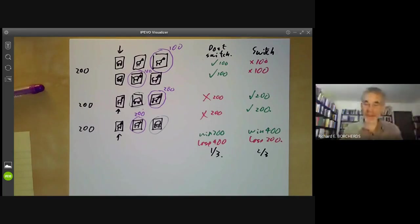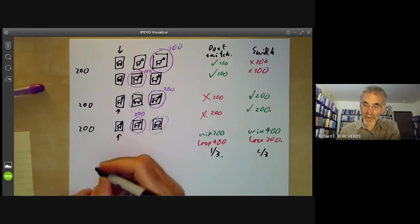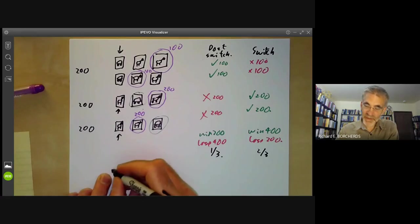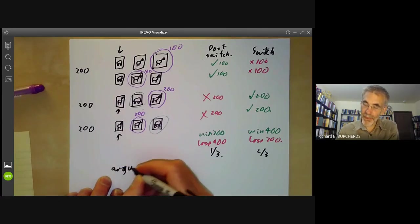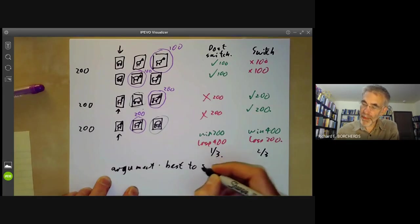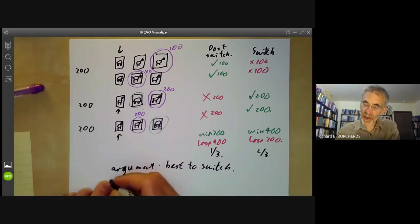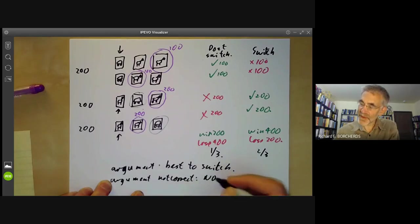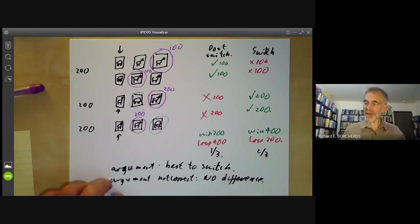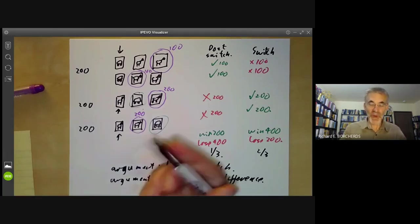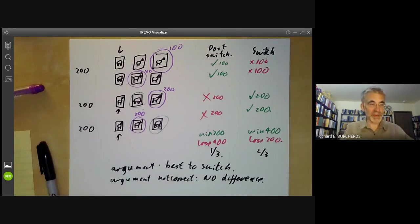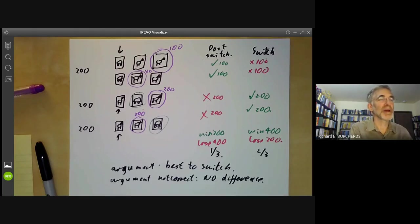There's a final argument that it is best to switch. Suppose you're unsure whether this argument is correct or not. Well, if the argument is correct, it's best to switch. Suppose the argument is not correct. Then it makes no difference. And suppose you're unsure whether the argument is correct or not. Well, then you may as well switch because if the argument is correct, then you gain. And if the argument is not correct, then you've lost nothing. So if you're unsure whether the argument is correct or not, you should still switch. Assuming, of course, that the host is not malicious.